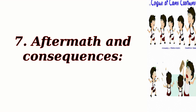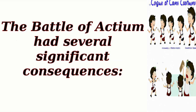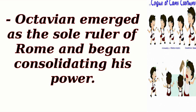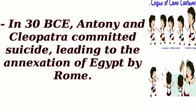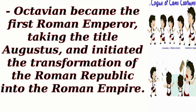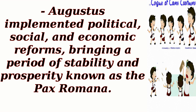7. Aftermath and Consequences. The Battle of Actium had several significant consequences. Octavian emerged as the sole ruler of Rome and began consolidating his power. Antony and Cleopatra fled to Egypt but were pursued by Octavian's forces. In 30 BCE, Antony and Cleopatra committed suicide, leading to the annexation of Egypt by Rome. Octavian became the first Roman emperor, taking the title Augustus, and initiated the transformation of the Roman Republic into the Roman Empire. Augustus implemented political, social, and economic reforms, bringing a period of stability and prosperity known as the Pax Romana.